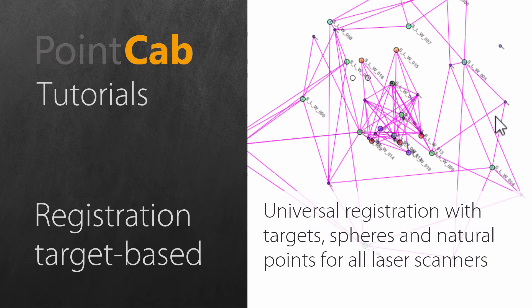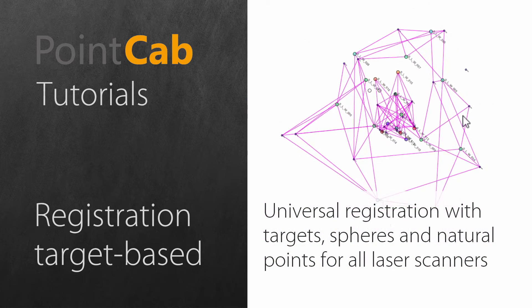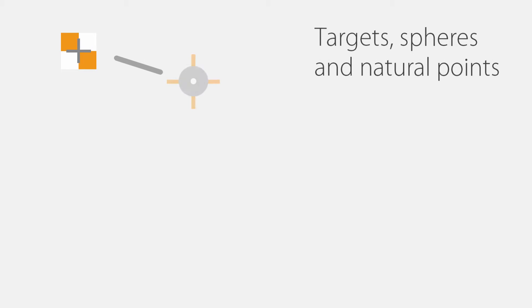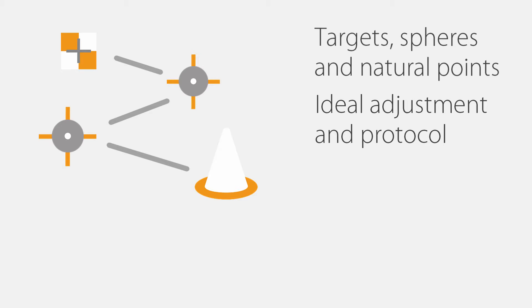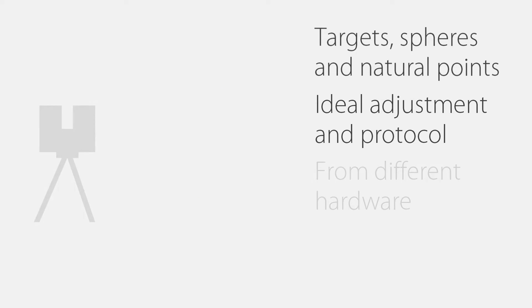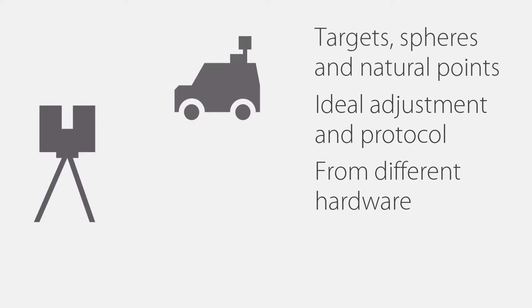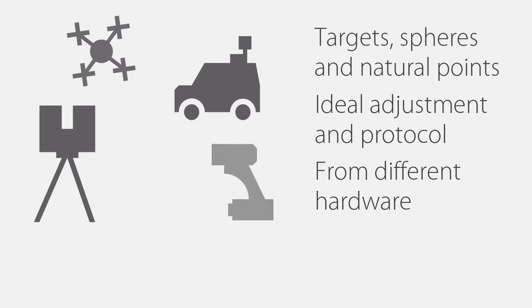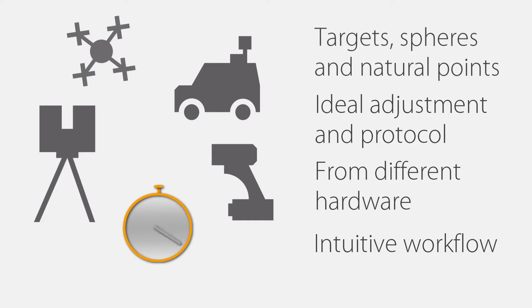In this training session, we will show you our target-based registration in PointGap. The example contains reference spheres as features. When desired, we can also use natural points instead. When we adjust the registration, we take all scans into account. This is just as self-evident for us as the detailed PDF protocol that comes with it. You can merge scanner data from different hardware manufacturers, all at the same time in the same project. PointGap's main objective is to reach results faster than with any other comparable software solution.